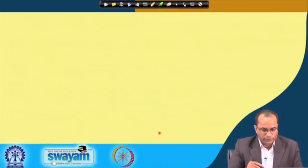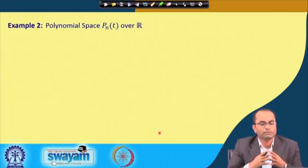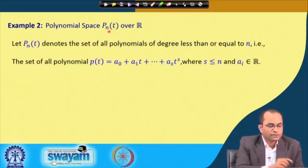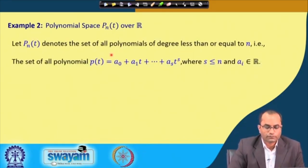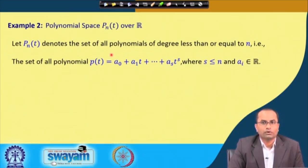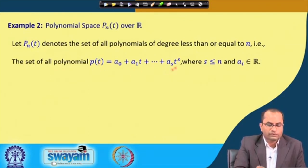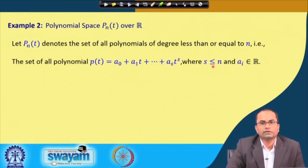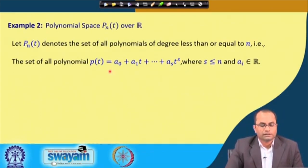The next example is the polynomial space. We consider P_n(T) over R. P_n(T) denotes the set of all polynomials of degree less than or equal to n. These polynomials look like a0 + a1·T + a2·T^2 + ... + as·T^s, where s ≤ n. Constants, linear polynomials, quadratic polynomials and so on all belong to this set depending on n, and all these coefficients a_s are real numbers.